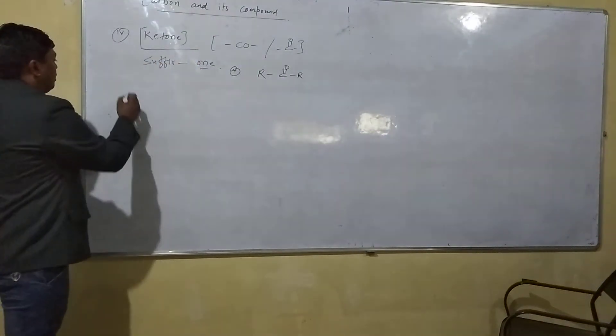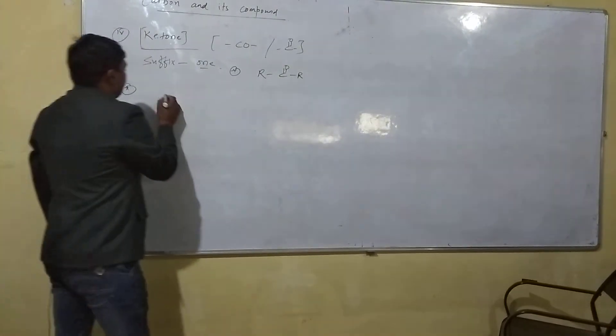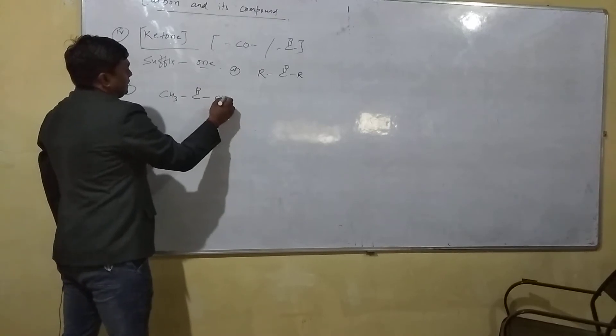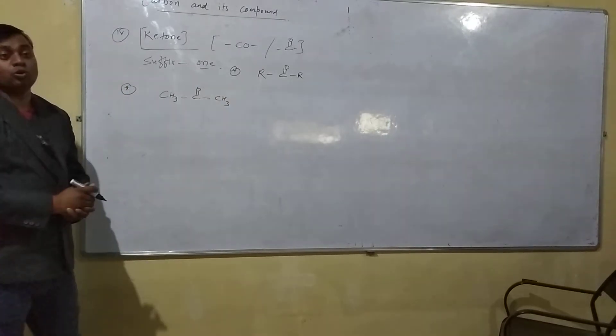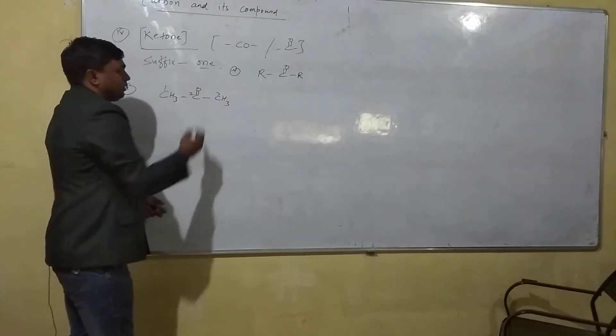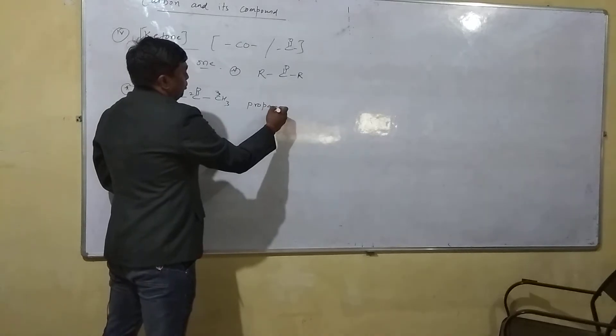First number of R can be minimum of one carbon, right? So, first number is CH3, C=O, CH3. Here, you have to count the total number of carbon atoms. So it is 1, 2, 3. 3 carbon atoms are there, so here I need what? Propane.